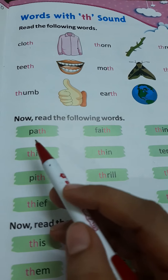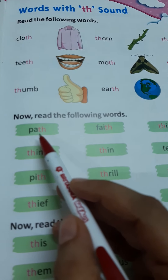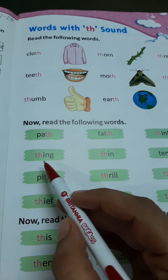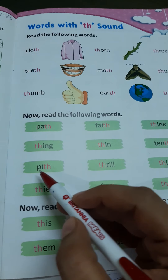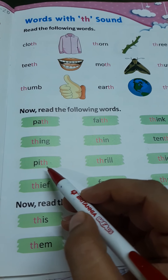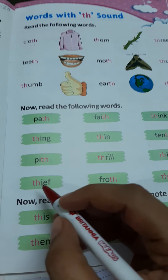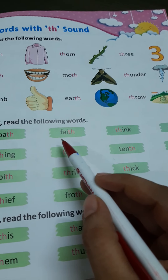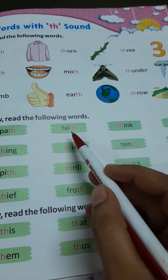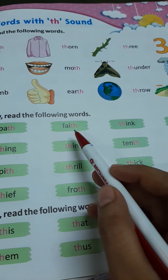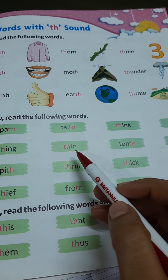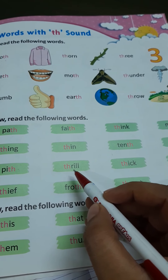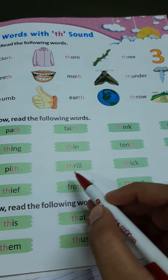Now read the following words. P-A-T-H, path. TH-I-N-G, thing. P-I-T-H, pith. TH-I-E-F, thief. F-A-I-T-H, faith. TH-I-N, thin. TH-R-I-L-L, thrill.